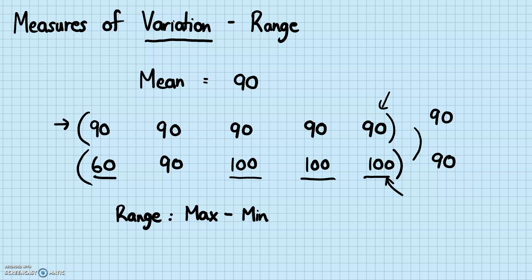So in our first set of data here, they're all 90. So the maximum minus the minimum is just going to be zero. So the range is zero for the first set of data. When the range is zero, you can automatically know that all the data has to be the same because the maximum and minimum are the same. That's the only way that their difference is zero.